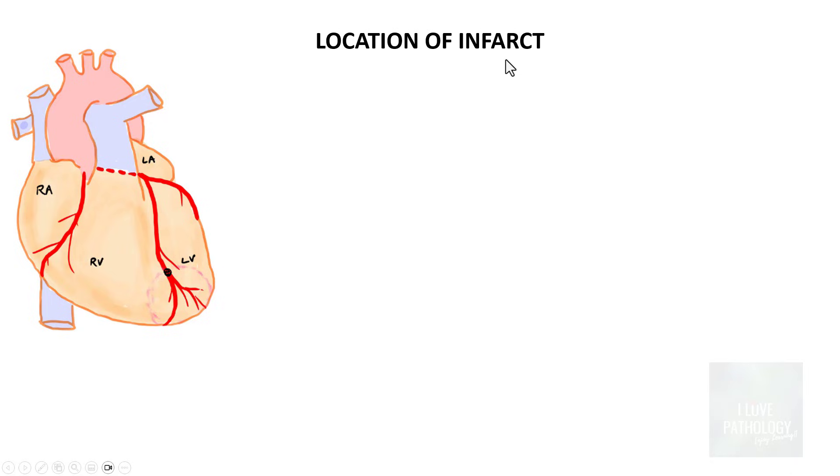Now let us see the location of infarct. Say for example you have an obstructive lesion or an atherosclerotic plaque which has ruptured and has caused obstruction of the left anterior descending coronary artery. If there is an obstruction somewhere here, then this is the area which is at risk. So to begin with, the first part of the heart which suffers from irreversible damage is the subendocardium.